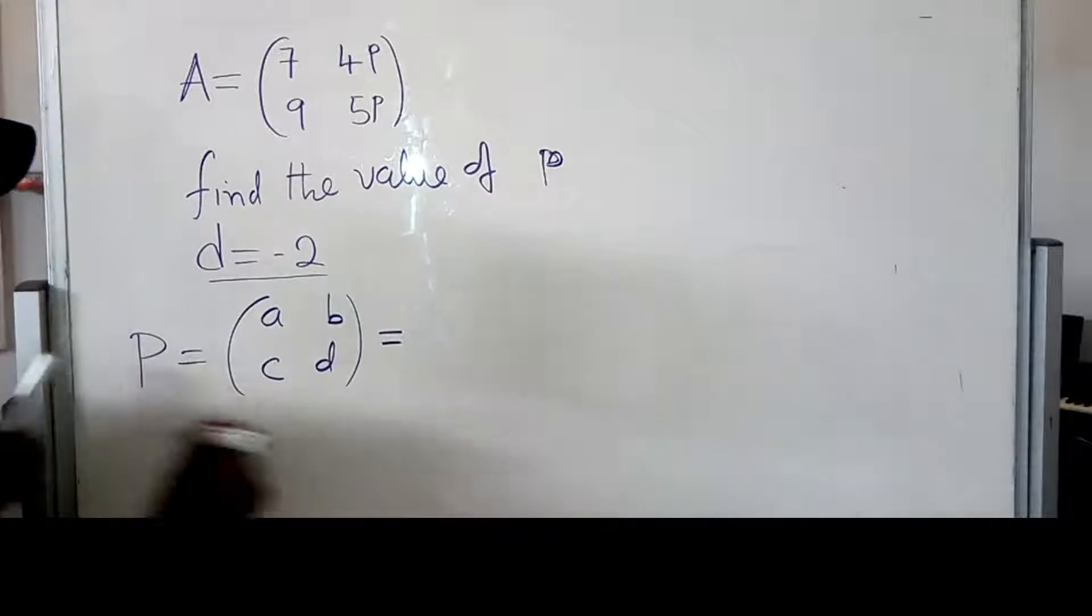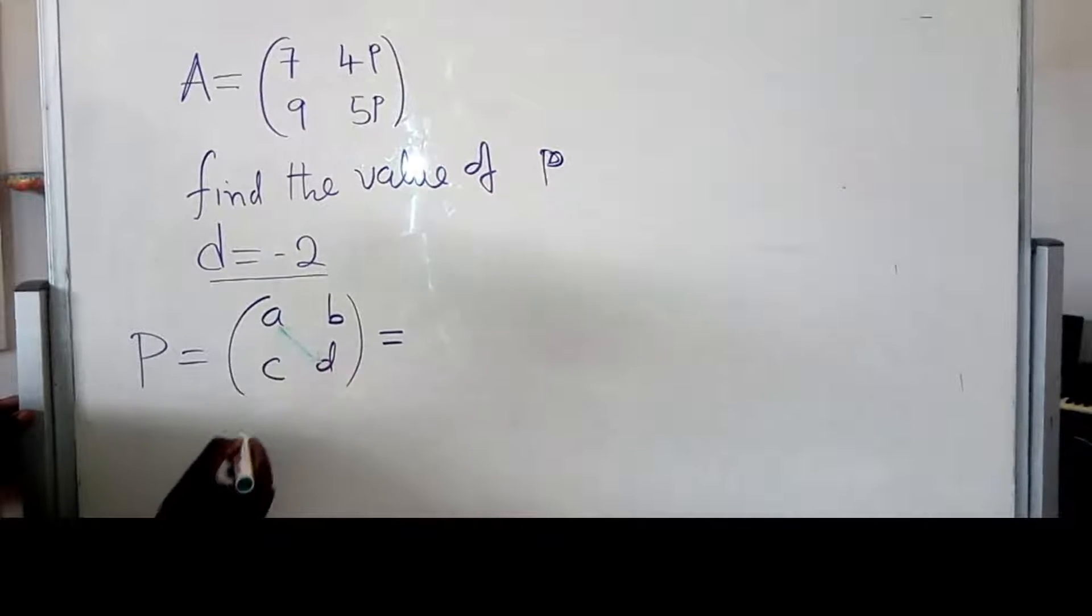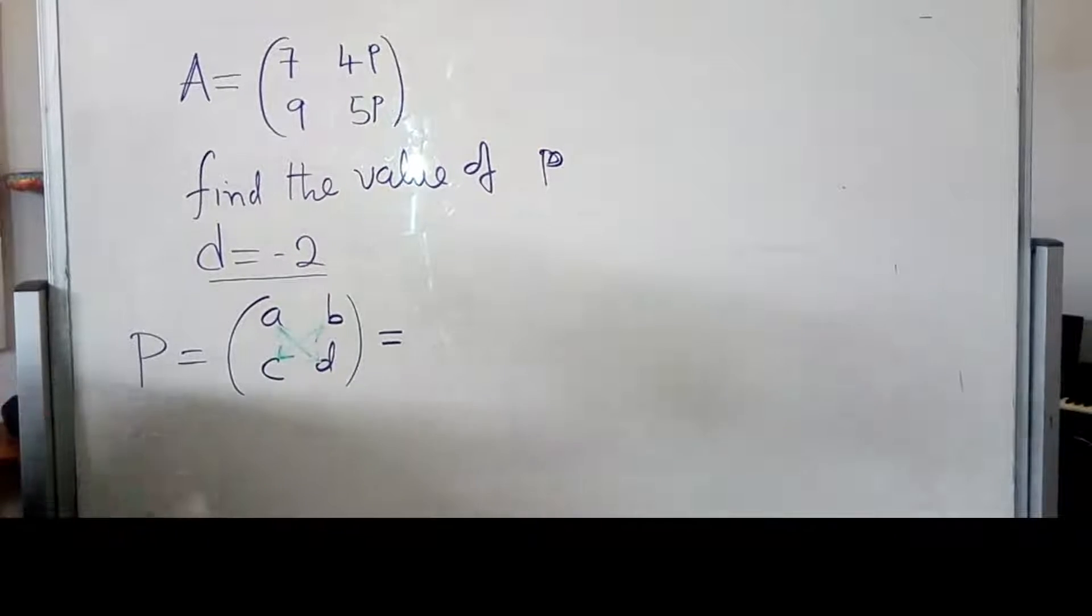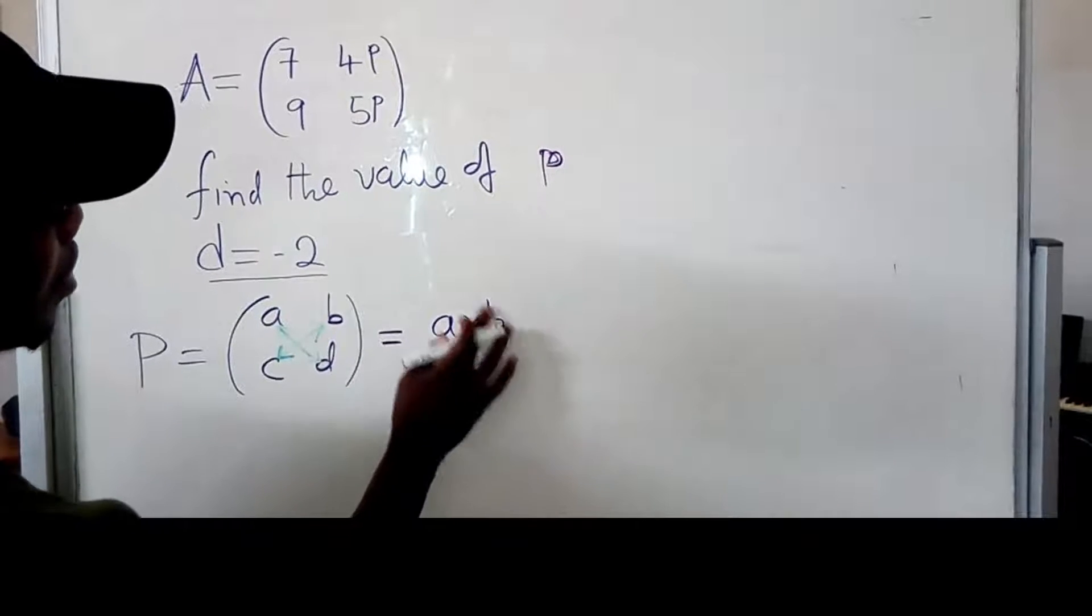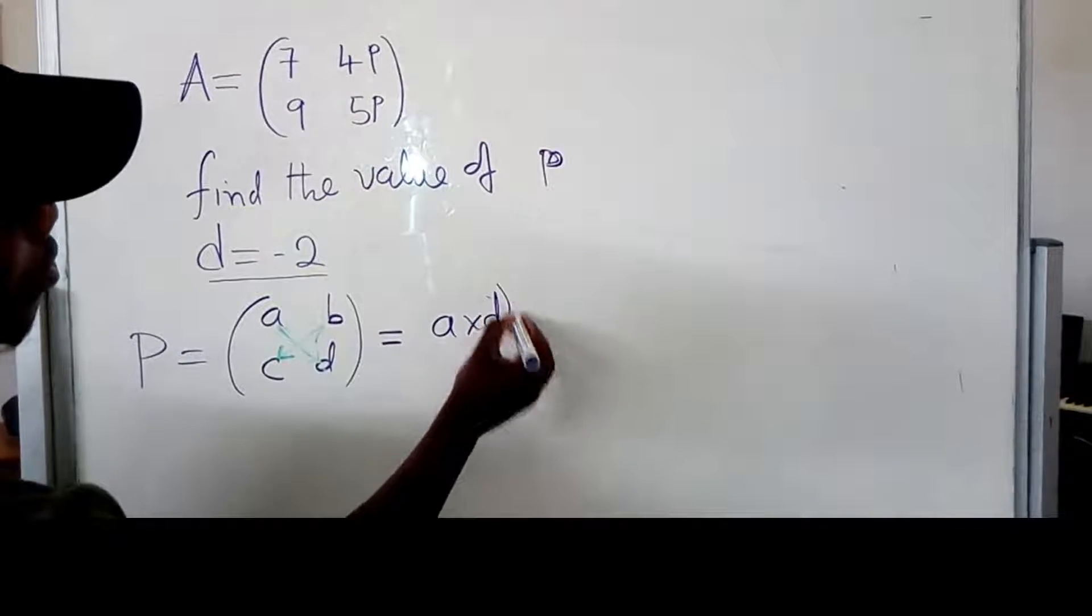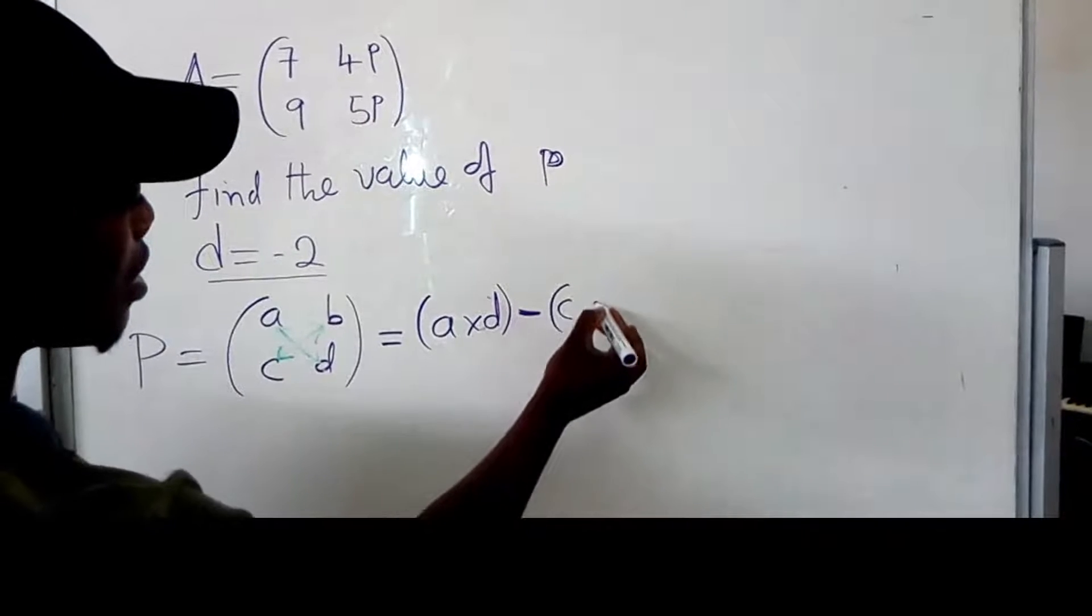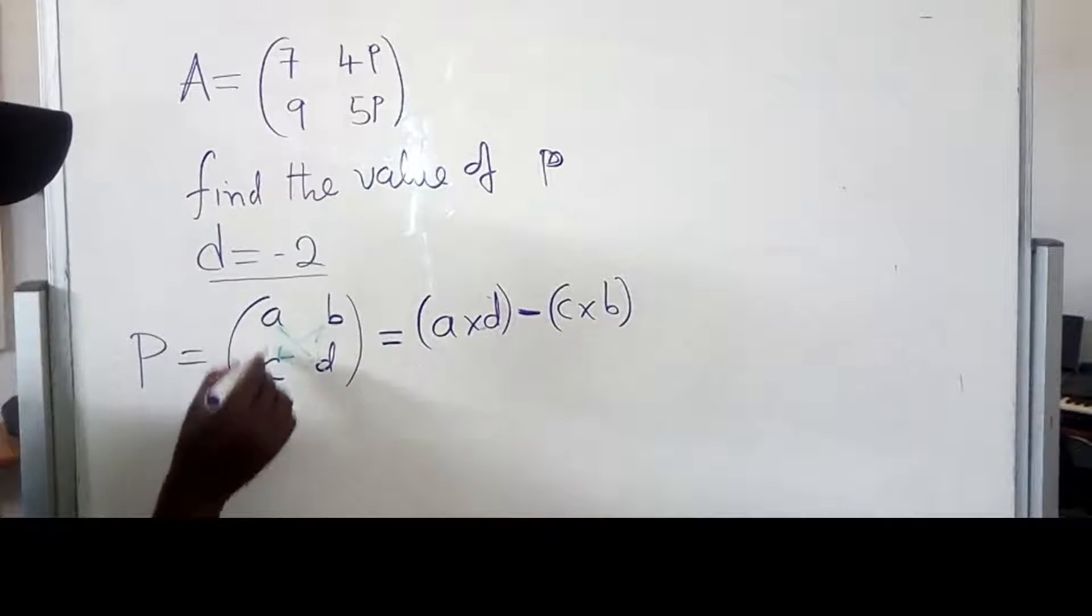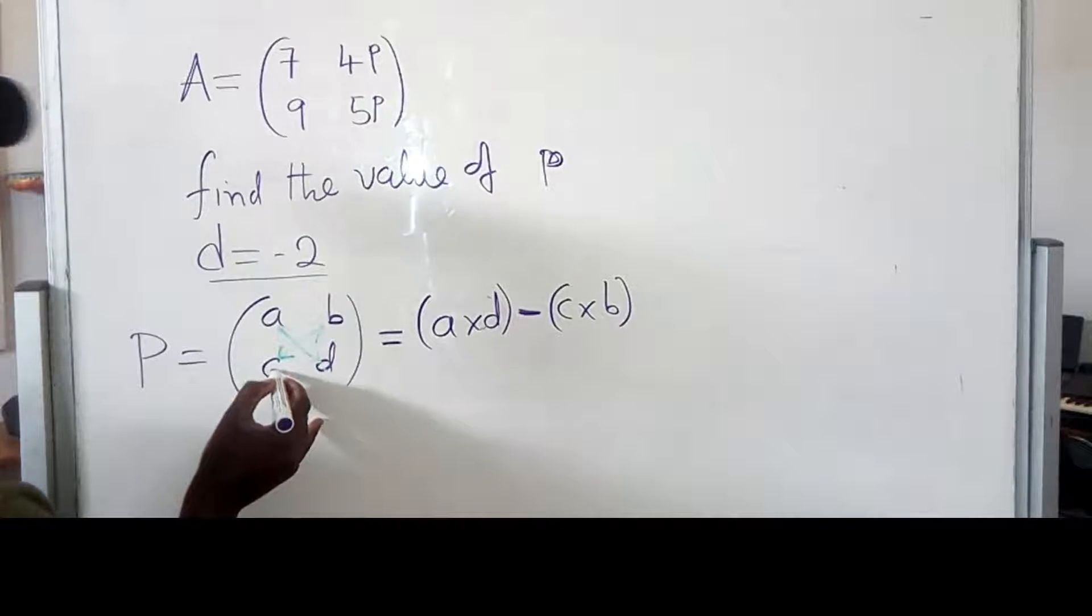So, this is what we do. You multiply these two, minus the multiplication of these two. And it will look like this. A times D, these two, minus C times B. So, C times B. So, you start from the values which are here. So, you say A times D minus C times B.